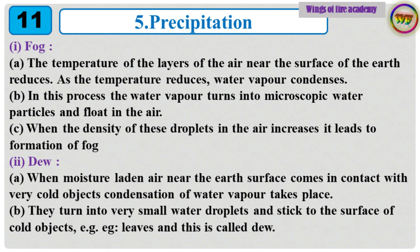1. Fog: A. The temperature of the layers of air near the surface of the earth reduces. B. As the temperature reduces, water vapor condenses. C. In this process the water vapor turns into microscopic water particles and floats in the air. When the density of these droplets in the air increases, it leads to formation of fog.